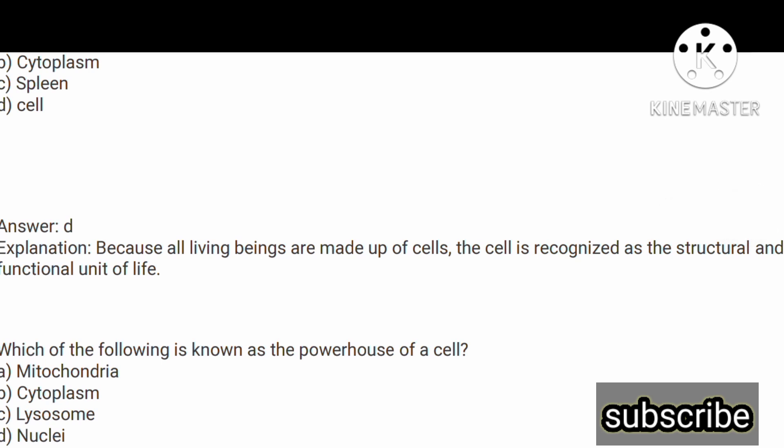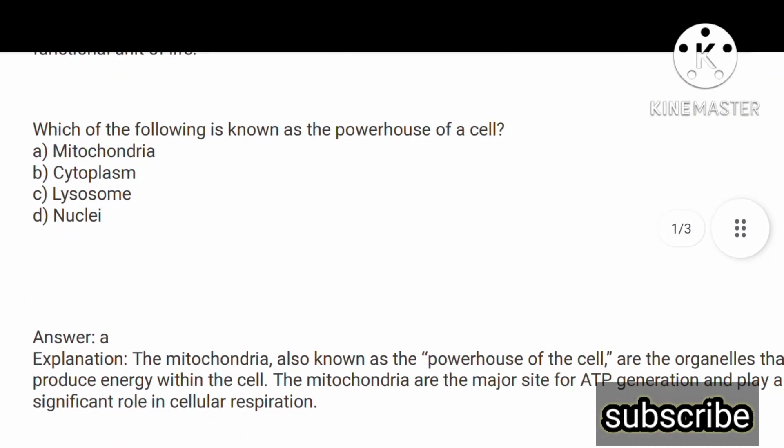Next question: which of the following is known as the powerhouse of the cell? This is the most important question. The answer is mitochondria. Option A is mitochondria. The mitochondria is also known as the powerhouse of the cell. It is the organelle that produces energy within the cell. The mitochondria are the major sites for ATP generation and play a significant role in cellular respiration.